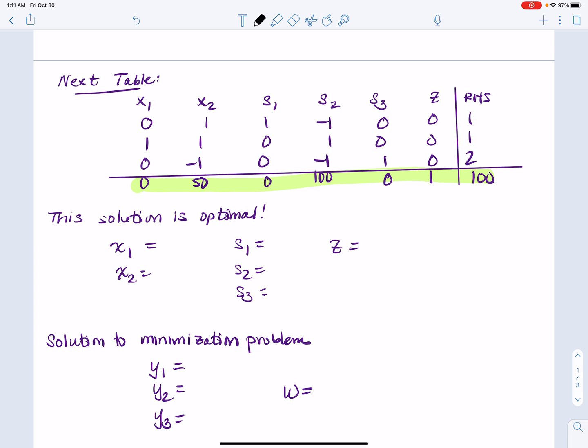So the solution to the maximization problem, we're going to read it the same way as before. x1 is a basic variable because it has all zeros except one. We'll say x1 is one. We'll say x2 is non-basic, so its value is zero. We'll say s1 is one, s2 is zero, s3 is two, and z is 100.